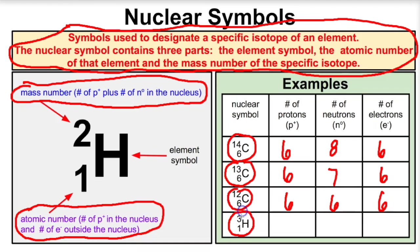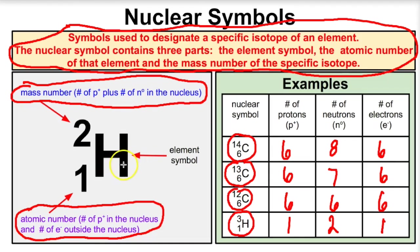Let's look at this isotope of hydrogen. Its atomic number is one, so there's one proton inside the nucleus and one electron outside the nucleus. If we take the mass number three minus the atomic number one, we end up with two neutrons inside the nucleus. A nuclear symbol allows us to figure out exactly how many protons, neutrons, and electrons there are in a given isotope for a given element.